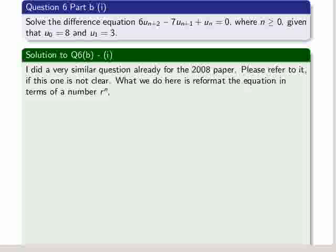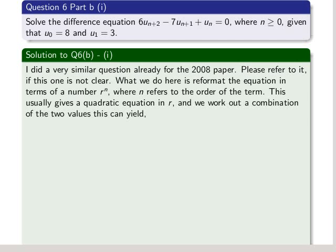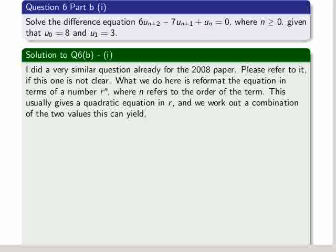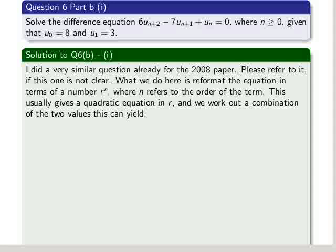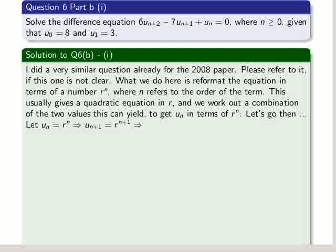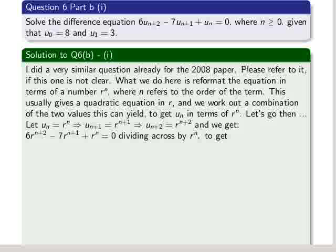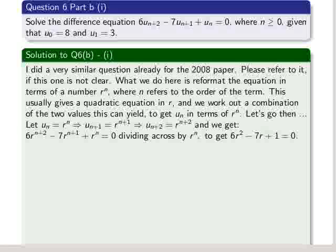What we do is reformat the equation in terms of r to the power of n, where n refers to the order of the term. This usually gives a quadratic in r. We work out a combination of the two roots of that quadratic equation, and we get u_n in terms of r to the power of n. So we go ahead. So u_n equals r to the power of n. We can do that to u_n+1 and u_n+2. We substitute that into the given difference equation. We divide across by r^n. All this is the same, same method.